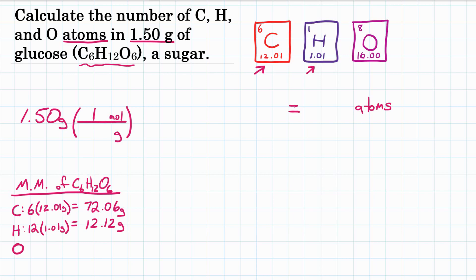For oxygen, 6 times, periodic table, 16.00. Multiply those, we get 96.00 grams. If we add all of these together, we get a total of 180.18. That's the molar mass of C6H12O6 glucose.